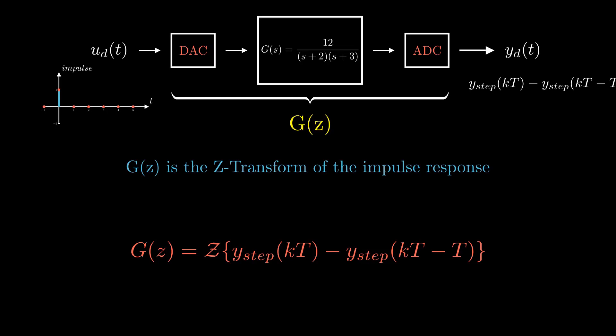Now we can find G(z), which is the z-transform of the impulse response. Applying the property of time delay, G(z) can be represented as follows.